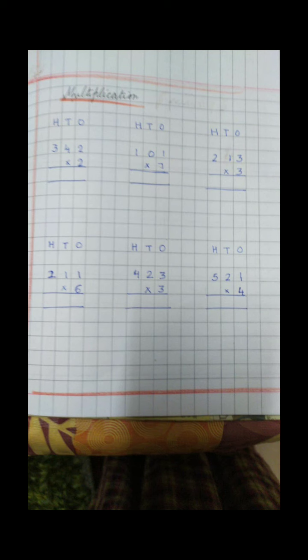Now in the last class we had a revision of different kinds of sums. Today we will start with multiplication — yes, multiplication of a single digit with three digits. Till now we have done simple horizontal multiplication. Now we are doing multiplication of three digits.